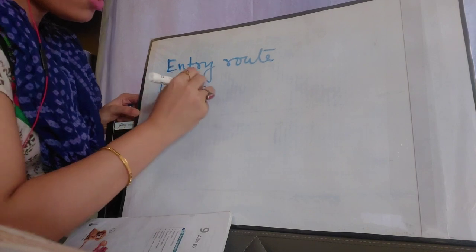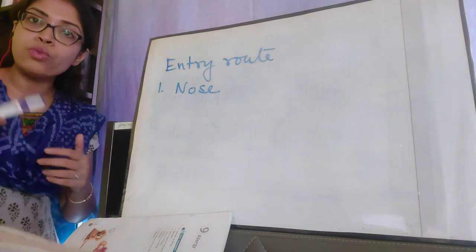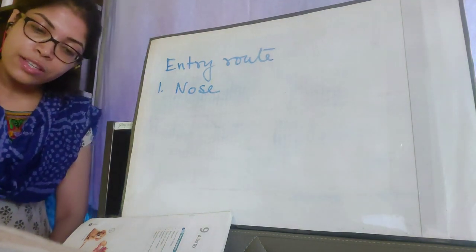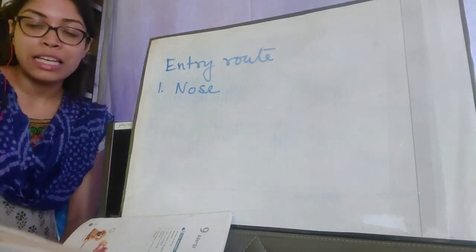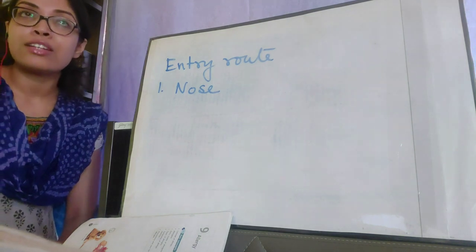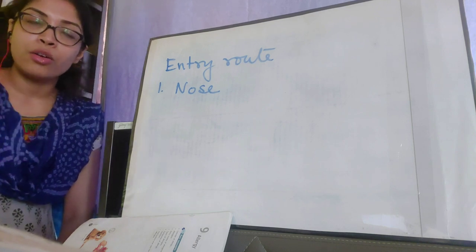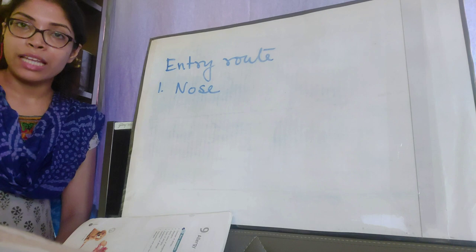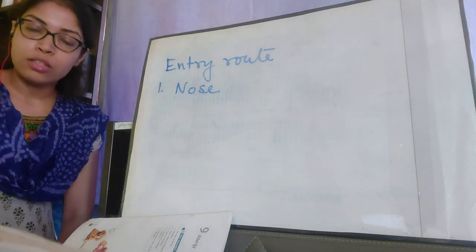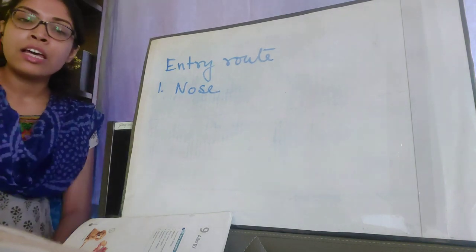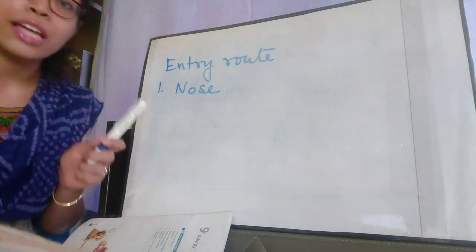Number one is through the nose. While we are breathing, allergens can enter through our nose. Allergens such as pollen grains, dust, and animal hair can enter the body when a person breathes in. These are small and light things that are always floating in the air we live and breathe in, so they can enter our body through the nose. This is the first entry route.